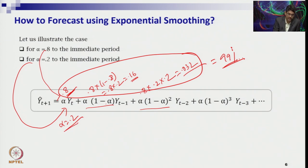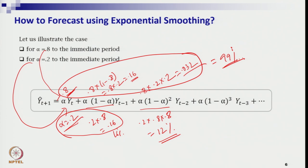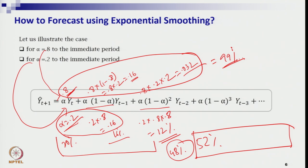Comparing the two cases: with 80 percent weightage to the immediate period, the first three points account for nearly 99 percent of the weight. Suppose you have 100 data points and are calculating the 110th — the older 106 data points get only 1 percent of the weightage. But with alpha = 0.2 and the first three periods accounting for only 48 percent, the remaining 52 percent is distributed to those older 106 data points. This is the key difference in weight selection between high and low alpha values.